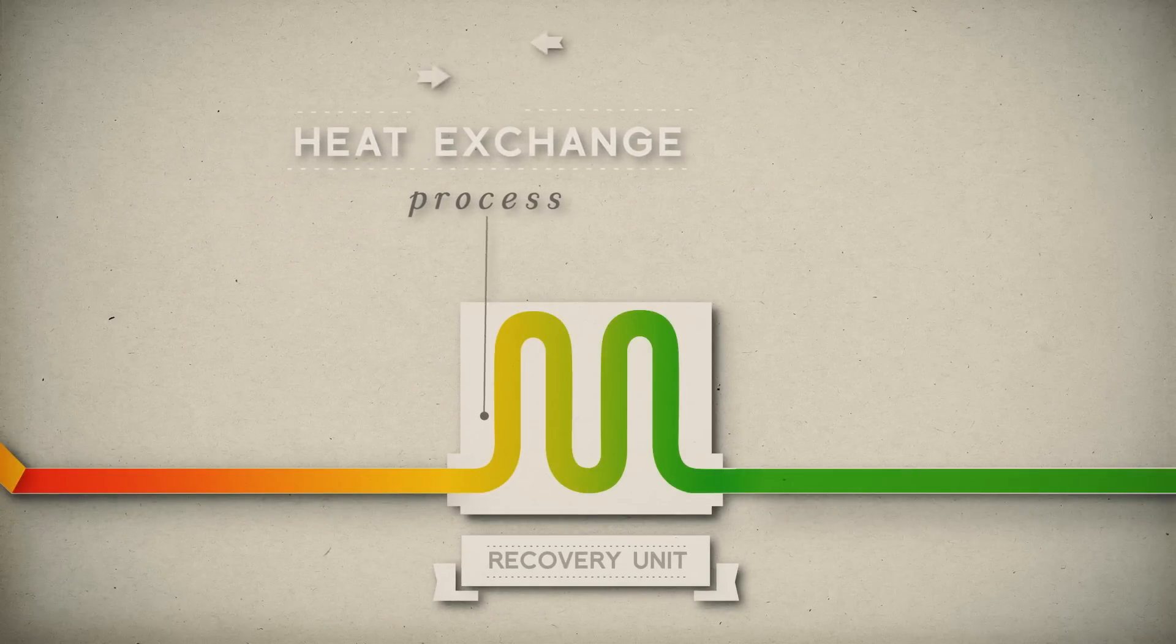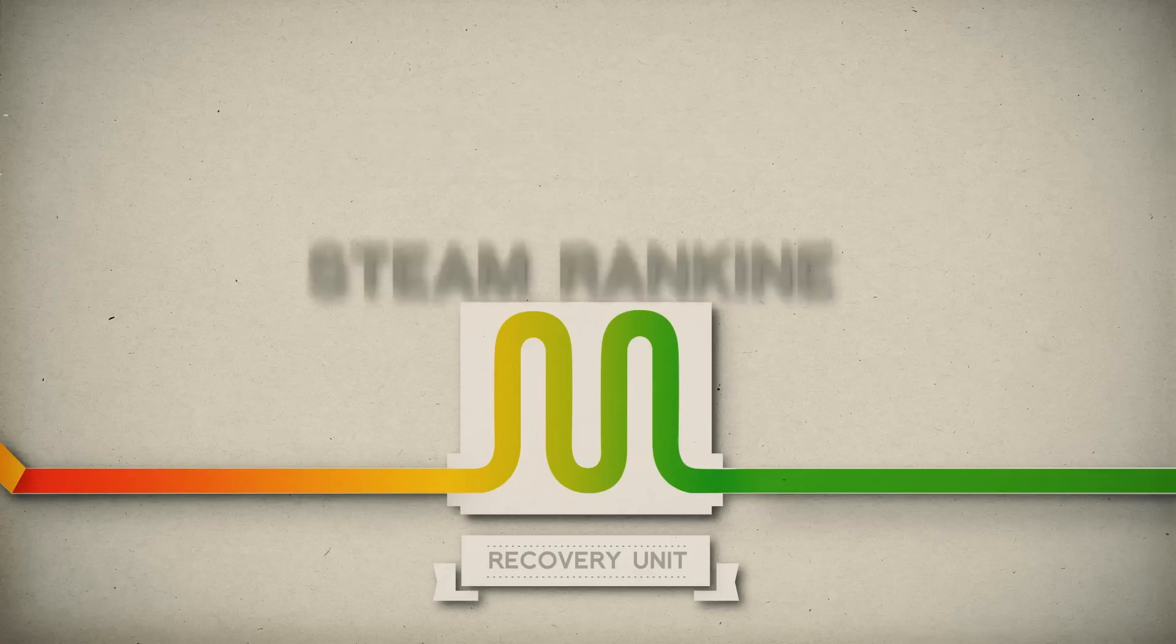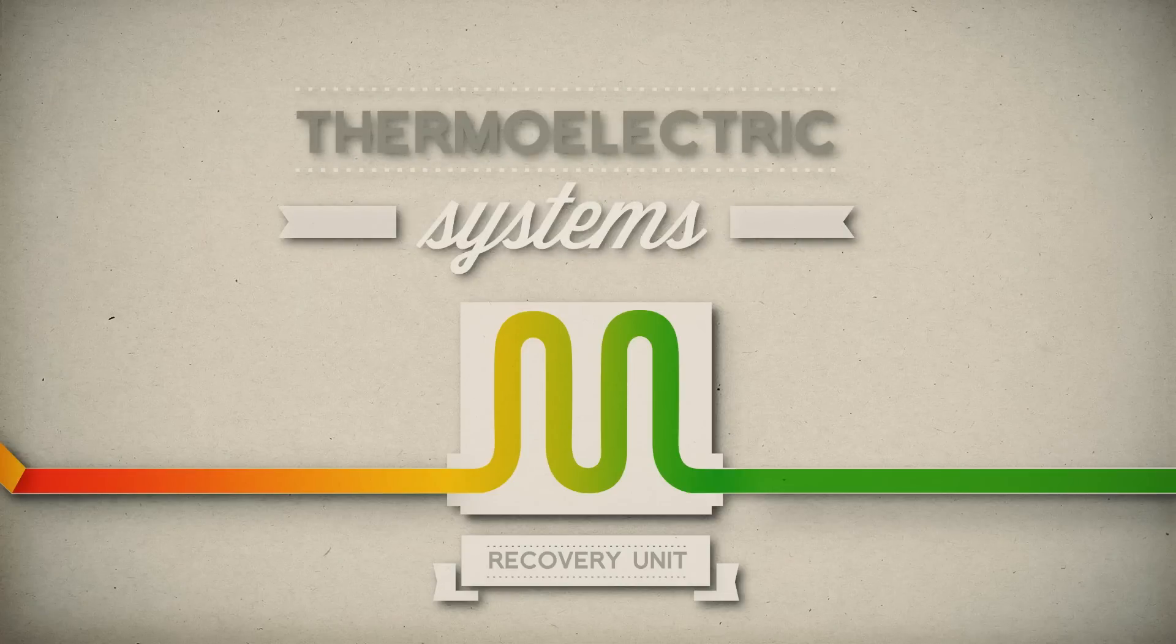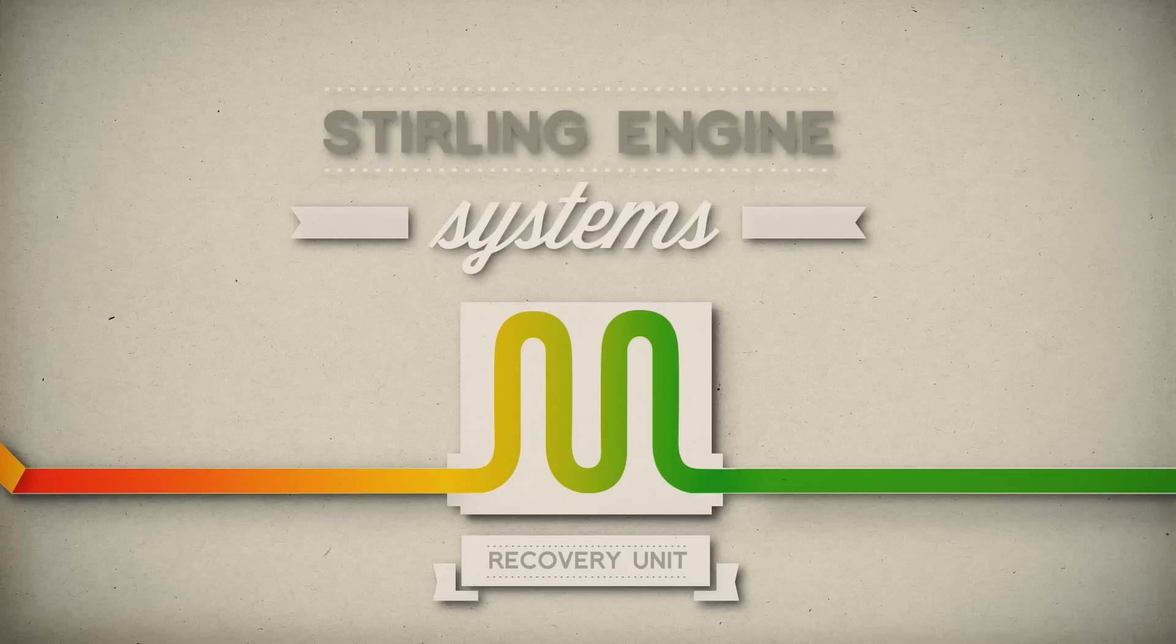There are several technologies used in waste heat to power, like steam Rankine cycle, organic Rankine cycle, Kalina cycle, supercritical CO2 cycle, thermoelectrics, the Stirling engine, and other emerging technologies.